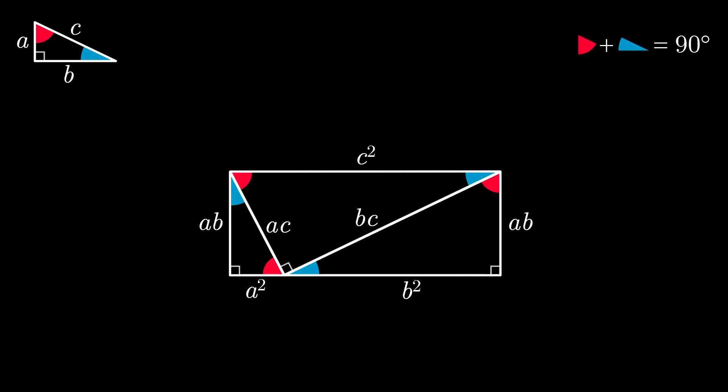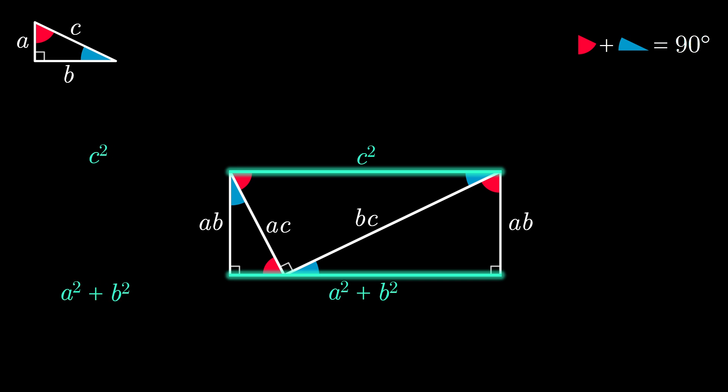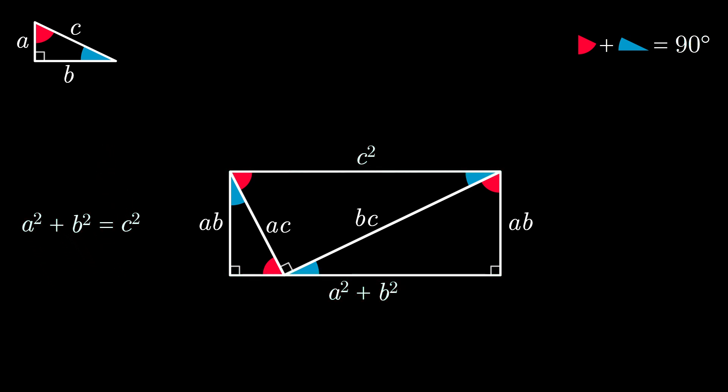Since we have a rectangle here, we know that the other two sides also have equal length. That is, our side length of C squared is equal to our side length of whatever A squared plus B squared is. In other words, A squared plus B squared equals C squared, thus proving the Pythagorean theorem.